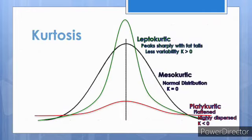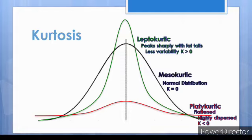Kurtosis is a measure of the shape of a curve — specifically whether the bell curve is normal, flat, or peaked. Since its calculation is complex, it is typically done by a computer. Using Fisher's measure of kurtosis, a normal distribution receives a coefficient of zero and is called mesokurtic. A large positive kurtosis value means the distribution is too peaked to be considered normal — this type is called leptokurtic, and the curve is taller and skinnier than a normal distribution.